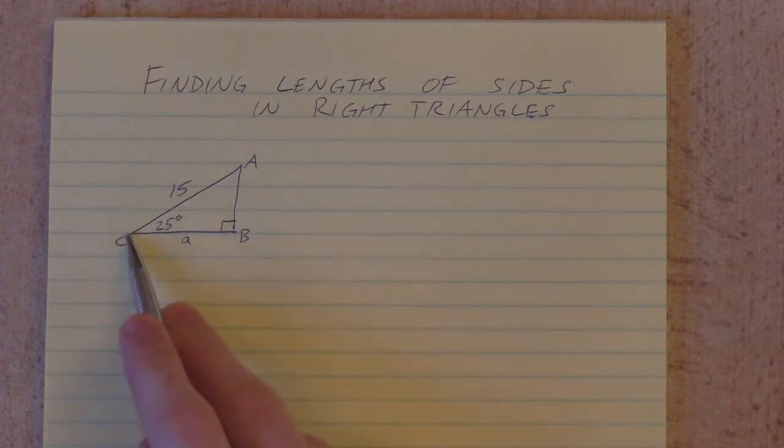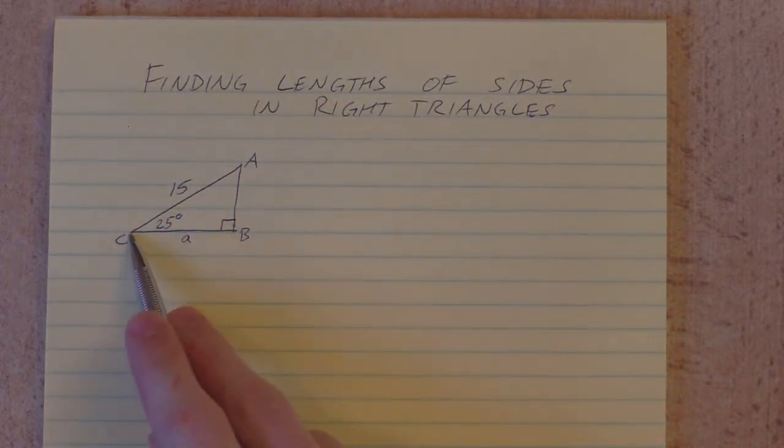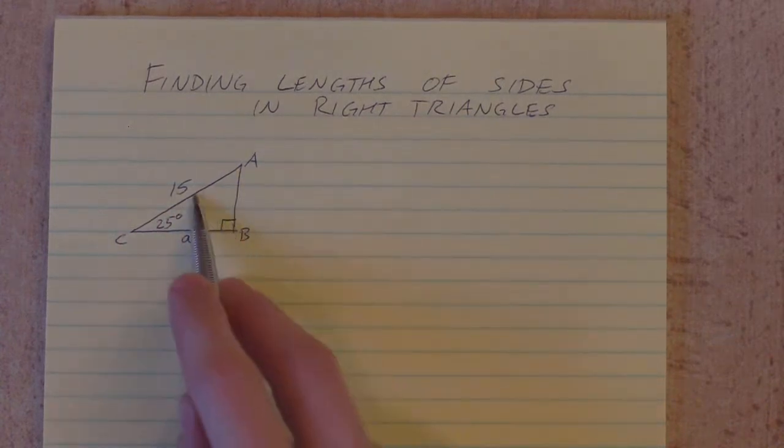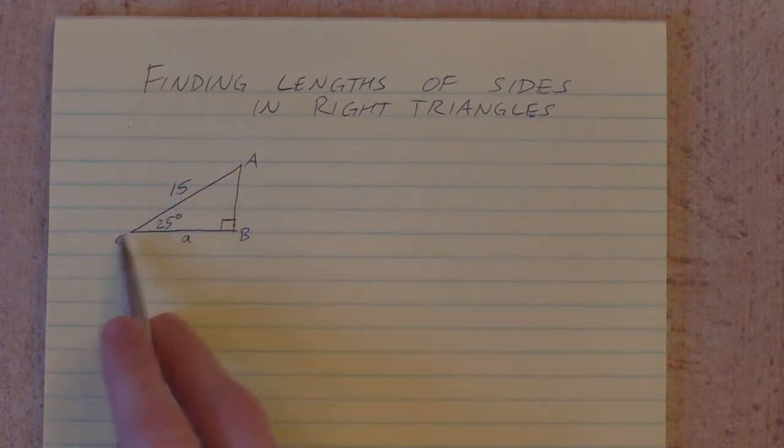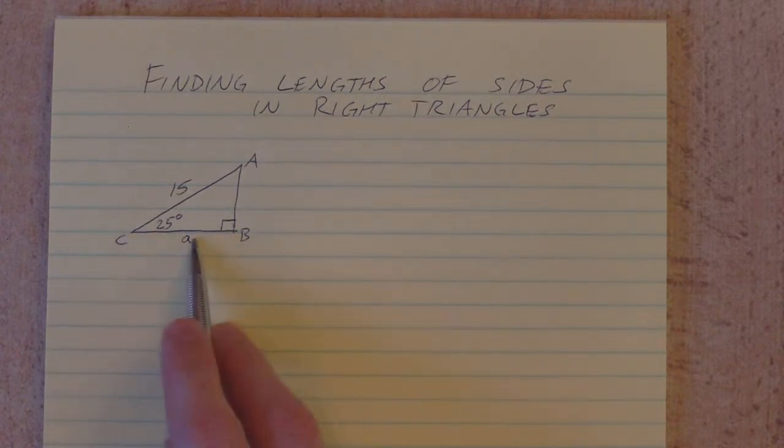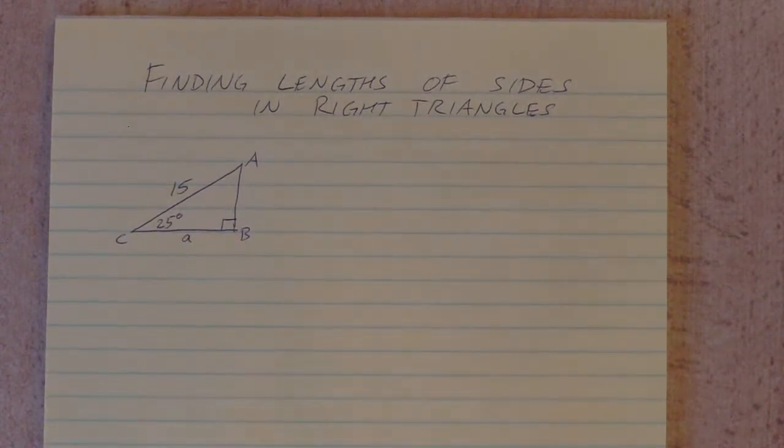In triangle ABC, we've got an angle of 25 degrees here at angle C. We know the hypotenuse, opposite the right angle there, is 15. And we don't know this side here, which we're calling little a. We want to find the length of that little a.